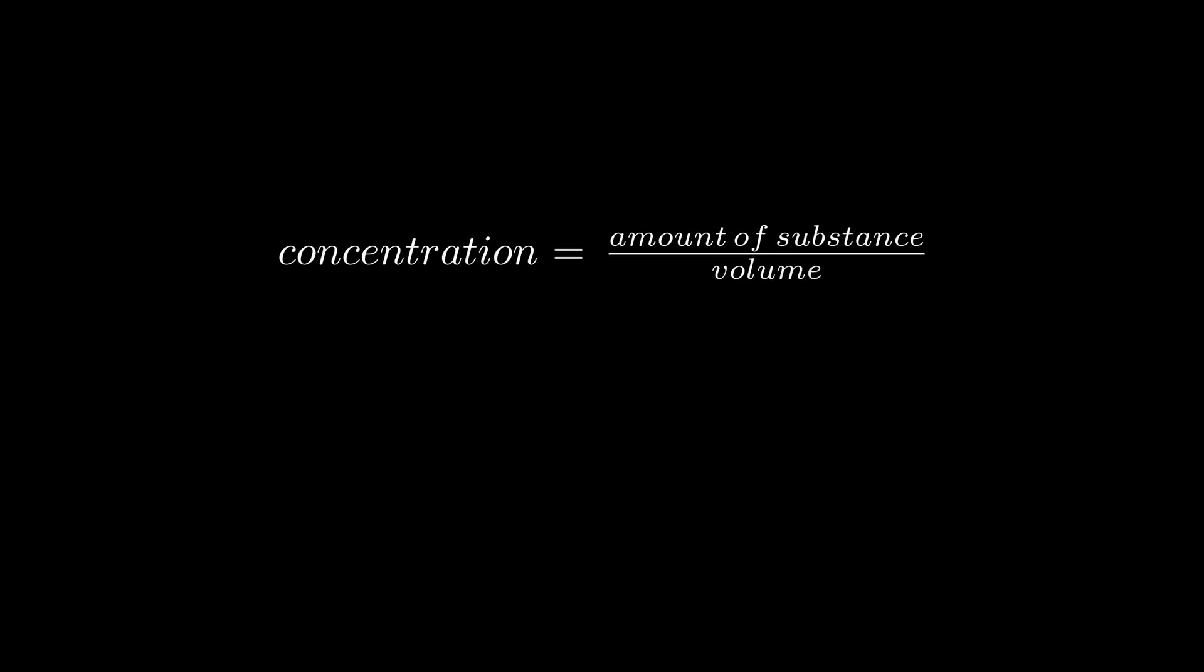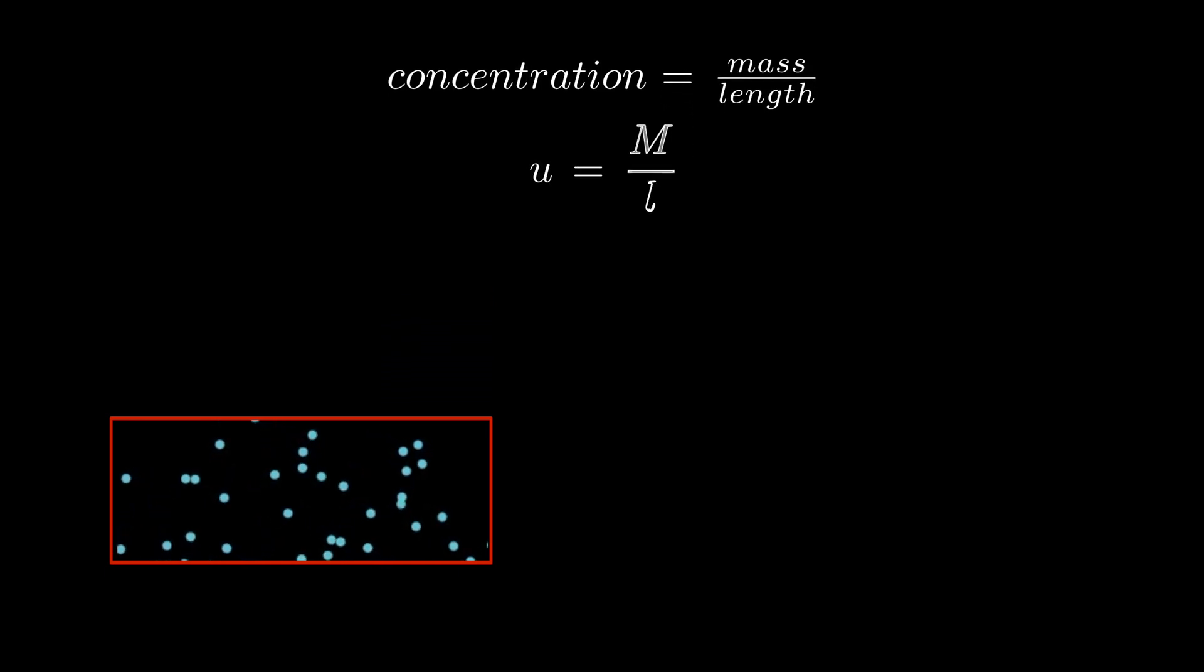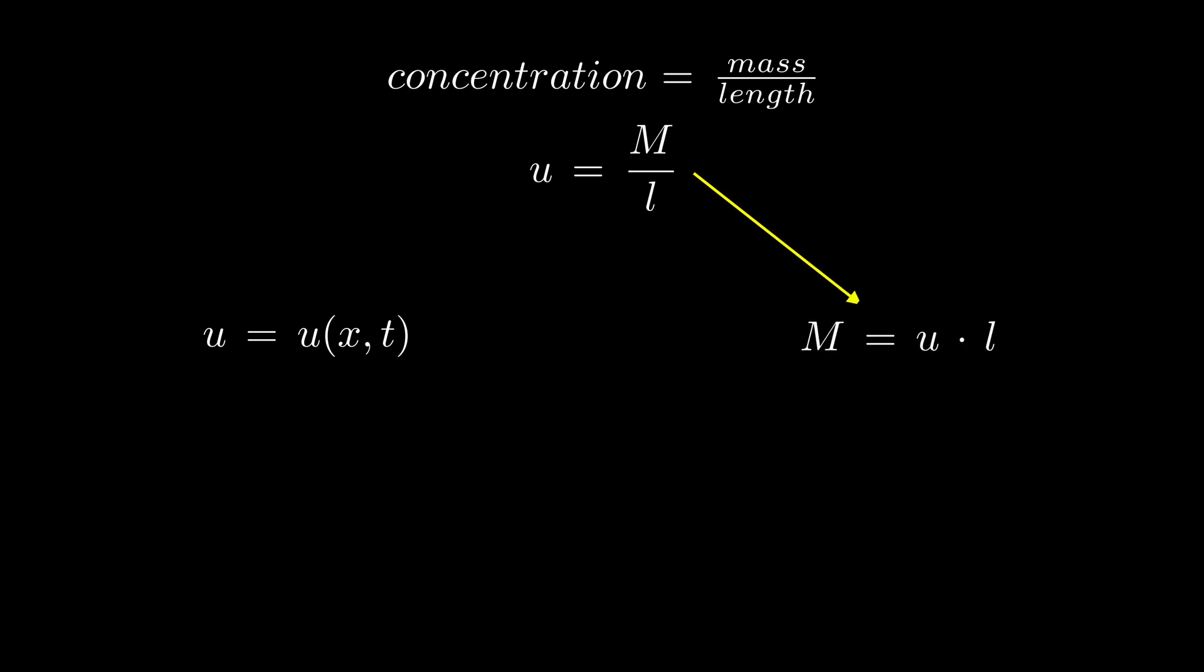Generally, concentration is the amount of substance per unit volume. Amount simply means mass. In our case, it will be per unit length for simplicity, which means that our container is one-dimensional. Concentration is different at different points within our container and it also changes with time. So, it is a function of two variables, position x and time t. From this basic definition, you can get the expression for mass by simply rearranging the fractions.